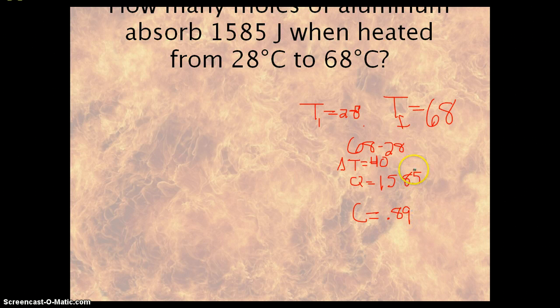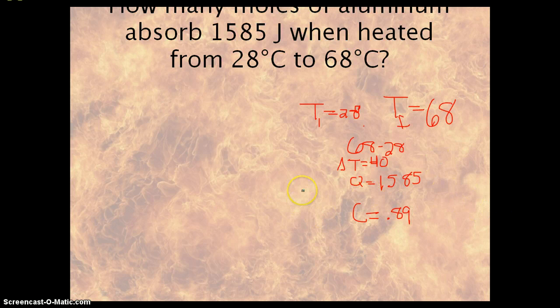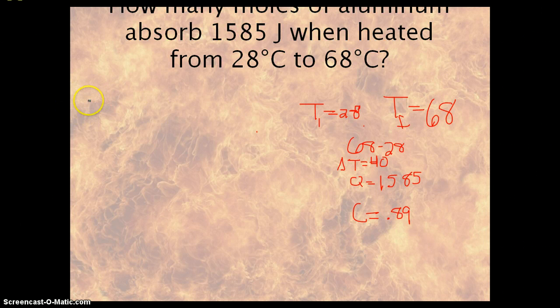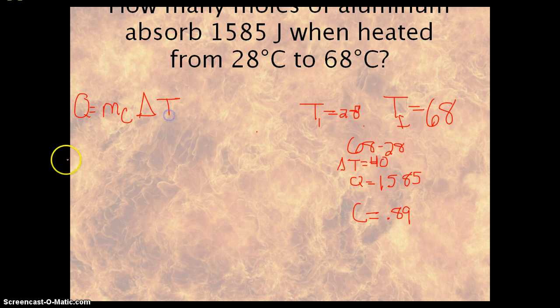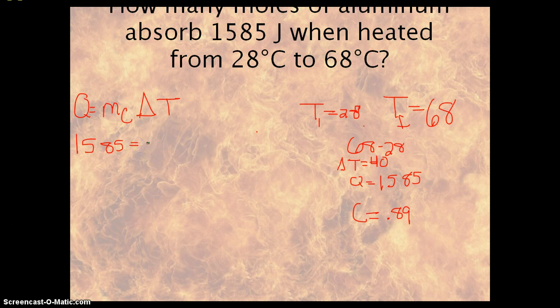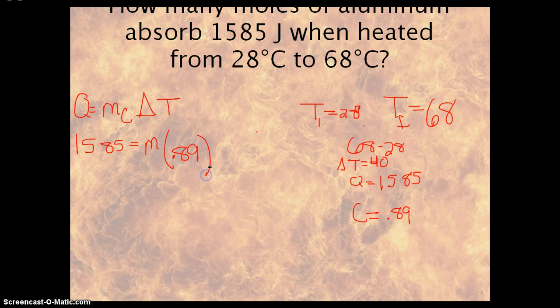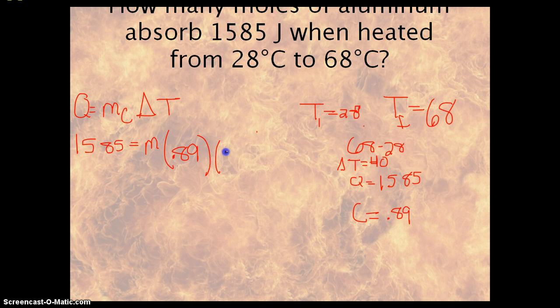So we're going to plug all this into our equation. Q equals mc delta T. Q is 1,585, m is what we're trying to find, C is 0.89 for aluminum from that list of values, and delta T is 40.